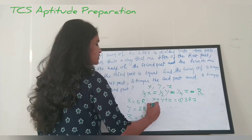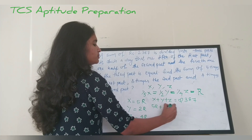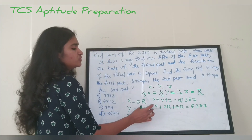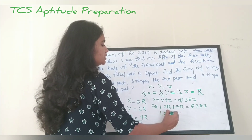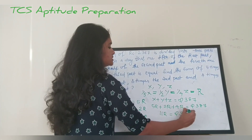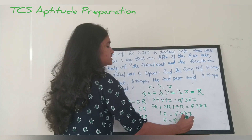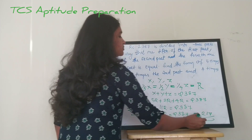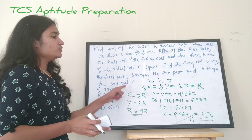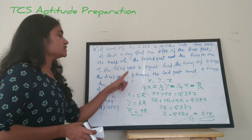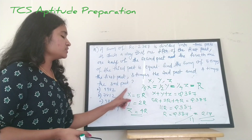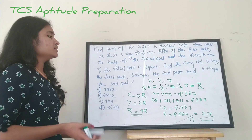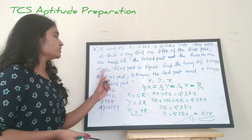So 11r equals 2387, giving r equals 2387 divided by 11, which is 217. Now we have to find the sum of five times the first part, three times the second part, and four times the third part. We can substitute: x equals 5r, y equals 2r, z equals 4r. So the expression is 5 times 5r, plus 3 times 2r, plus 4 times 4r.